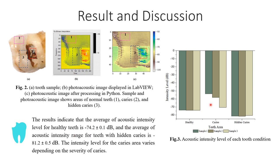The results show the acoustic intensity level of each tooth condition in figure 3. The average intensity level for healthy teeth is minus 74.2 plus or minus 0.1 decibel.